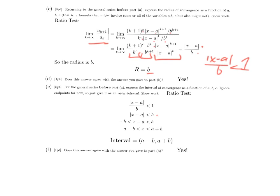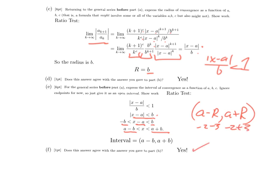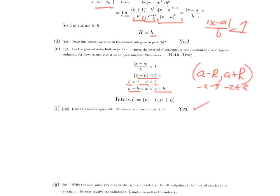The absolute value goes through b (which is positive) and k to the c (which is positive), but gets stuck on x minus a. We end up with absolute value of x minus a over b less than 1, which makes b the radius of convergence. Before the radius of convergence was 3, and b equals 3, so these agree. As a check: if you got different answers in each case, that was a good sign to go back and check your work. The interval is a minus b to a plus b, since the interval is always a minus r to a plus r where a is the center and r is the radius.